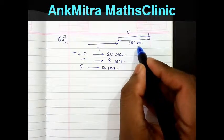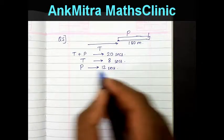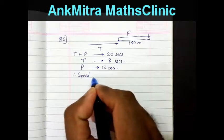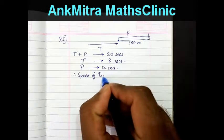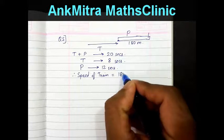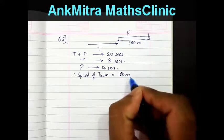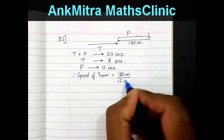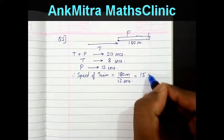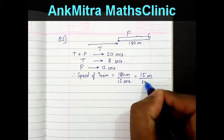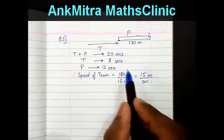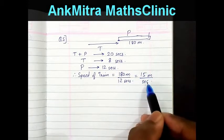To cover a distance of 180 meters the train needs 12 seconds, so the speed of the train equals 180 meters divided by 12 seconds, which comes to 15 meters per second.